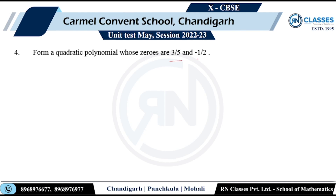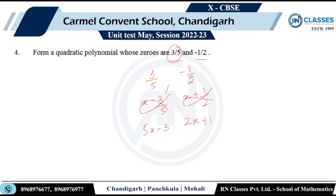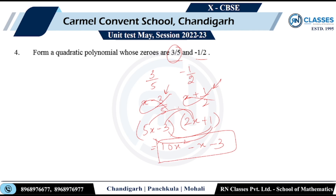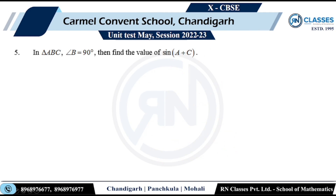Question four: form a quadratic polynomial whose zeros are 3/5 and −1/2. The factor for zero 3/5 is (5x − 3) and for zero −1/2 is (2x + 1), avoiding fractions. Multiplying: 10x² + 5x − 6x − 3 = 10x² − x − 3. This is the required quadratic polynomial.